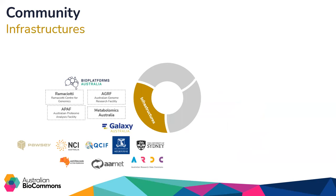And finally we have the infrastructures. These are data-producing core facilities like the Ramachotti Centre for Genomics, the Australian Genome Research Facility, the Australian Proteome Analysis Facility, and Metabolomics Australia. But it's also the BioCommons partner infrastructures, which you can see the logos for here on this slide.